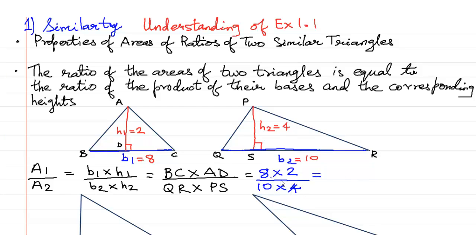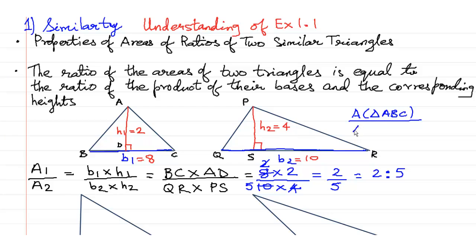Let us cancel this. 4 and 2 cancel to give 1 and 2; 10 and 8 simplify: 2 fives are 10, so this becomes 2 upon 5. So you may write that area of triangle ABC upon area of triangle PQR is equal to 2 upon 5.